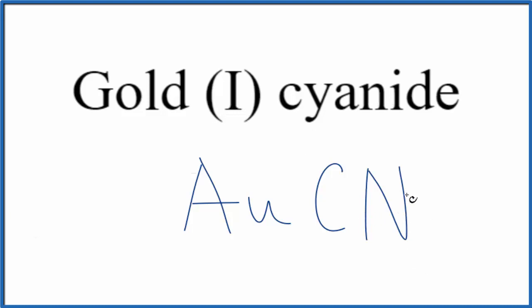If you were given AUCN and asked to write the name for this AUCN here, you need to recognize that the cyanide ion here has a 1 minus ionic charge. Gold is a transition metal, so it would have to be 1 plus, and then we could put the Roman numeral up here in the name.